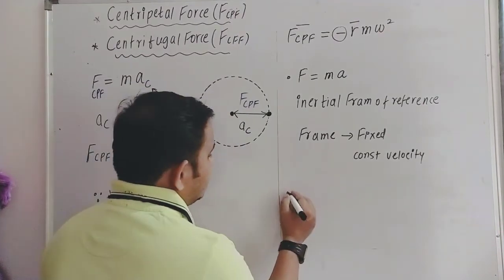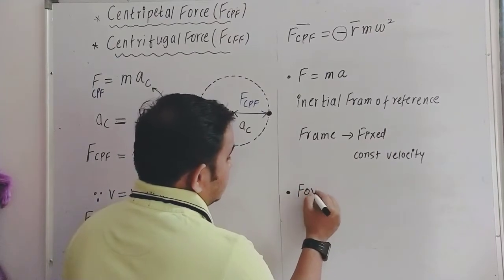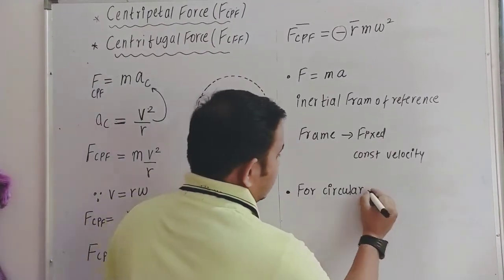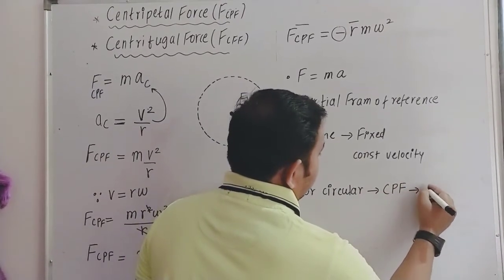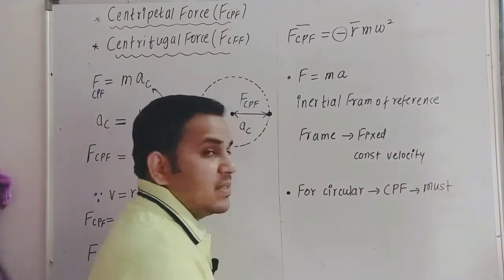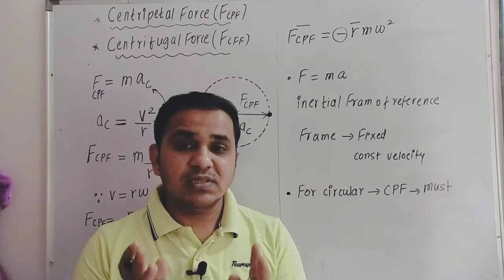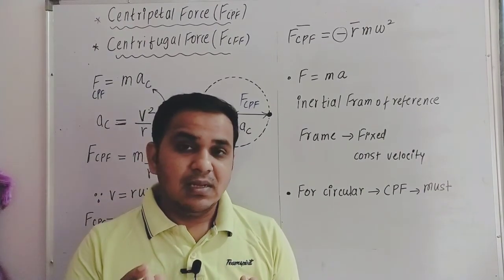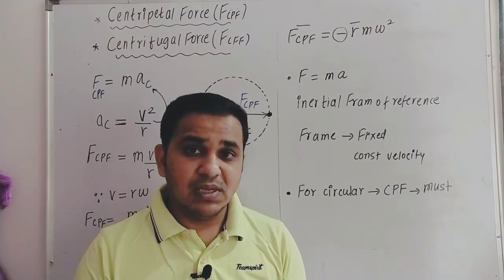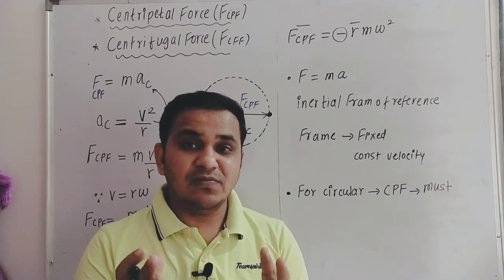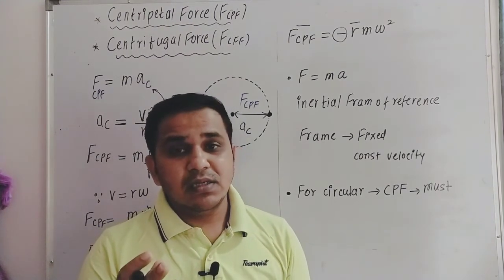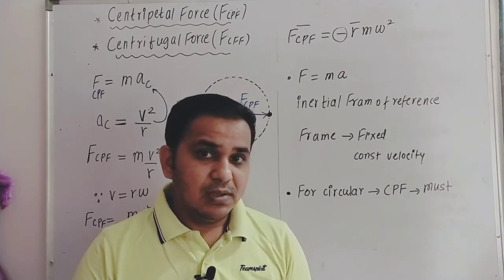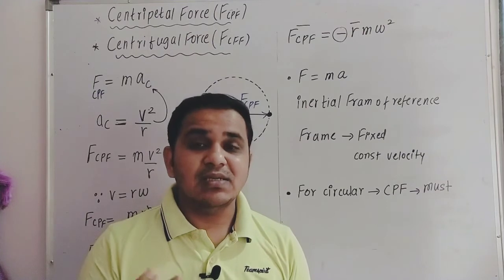The last point: for circular motion, any particle in the universe that performs circular motion must have centripetal force — it is necessary. An object cannot perform circular motion unless someone provides the centripetal force. For example, Earth revolves around the Sun in a circular orbit, and the centripetal force is provided by gravitational force directed towards the Sun.